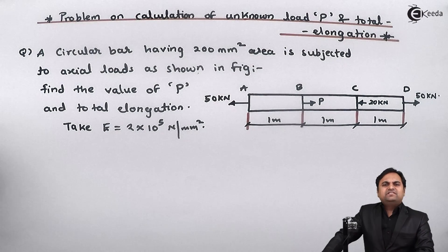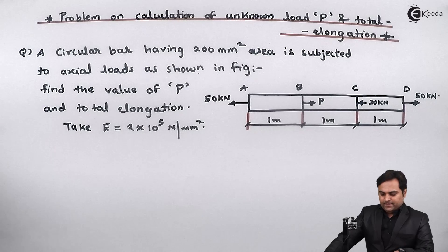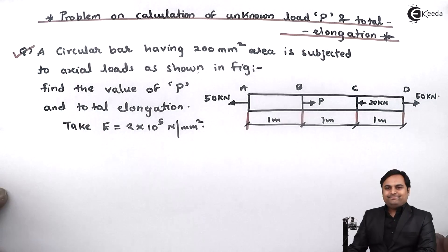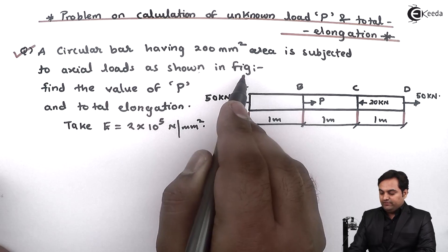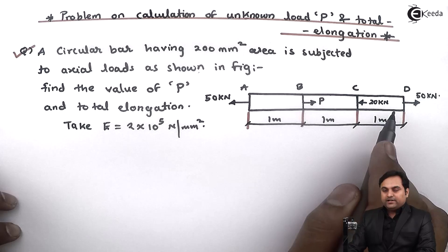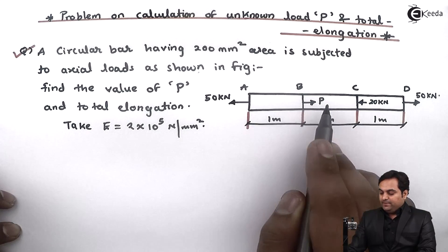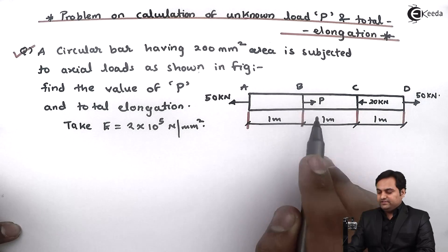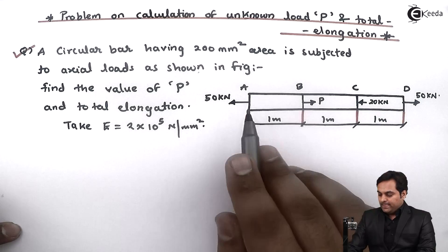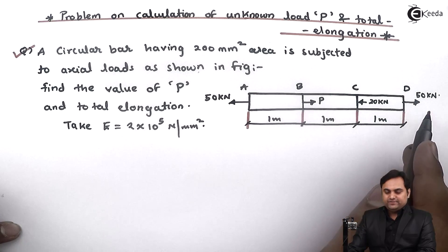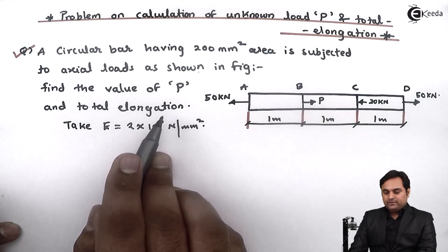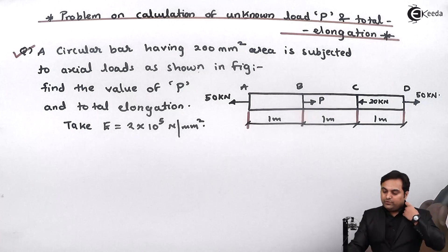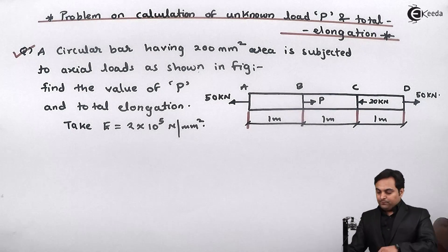Hello friends, in this video we will see a problem on calculation of the unknown load and total elongation. Here we have a question: a circular bar having 200 mm square area is subjected to action loads as shown in figure. The bar is divided into three sections AB, BC, and CD, each having one meter length. There are loads acting at various points.